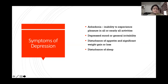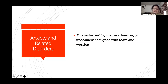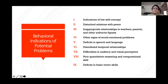Autism spectrum disorder is a kind of epidemic — we're seeing more and more children with symptoms showing qualitative impairment in social interaction and communication with stereotyped patterns of behavior, interests, and activities. Depression in children is called anhedonia — the child is unable to experience pleasure in any activities, always seen with a depressed mood, and has disturbance in appetite and sleep. Anxiety-related disorders are very common these days, especially in adolescence, with distrust, tension, uneasiness, fears, and worries. Indicators of potential problems include low self-concept, inability to get along with peers, difficulty relating to teachers and authority figures, signs of emotional problems, speech deficits, perceptual difficulties, and poor motor skills.